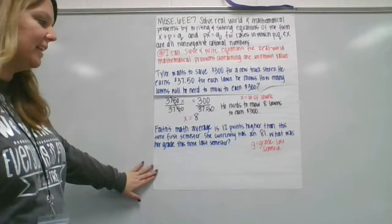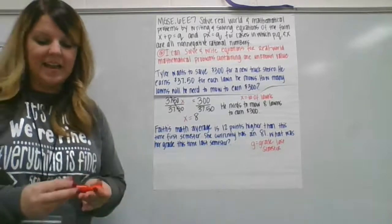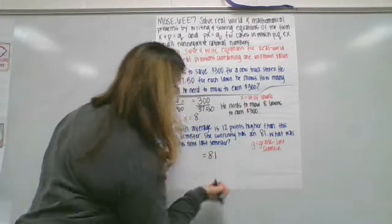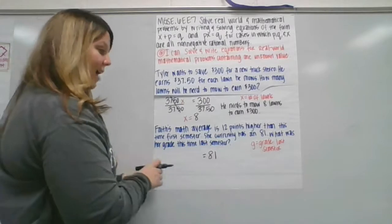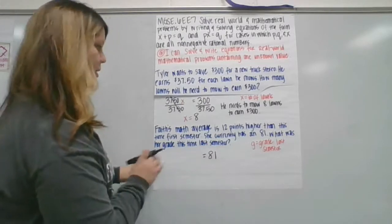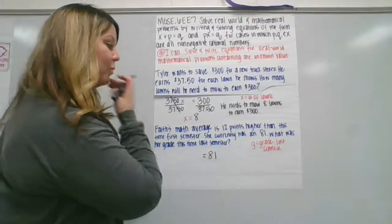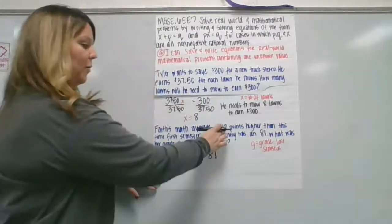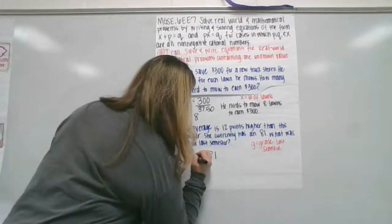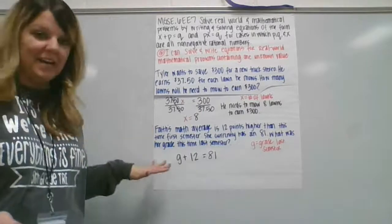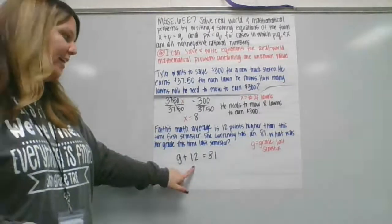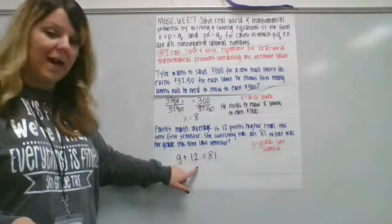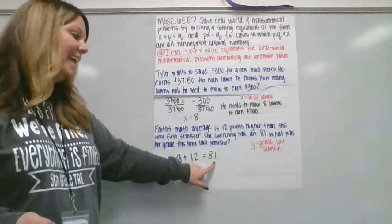We know that she currently has an 81. And we know that whatever her grade was last semester, G, plus 12 points should give us the 81 points. Okay. Let's read that again. Faith's math average is 12 points higher than this time the first semester. So the first semester grade plus 12, she currently has an 81, is 81. What was her grade this time last semester?